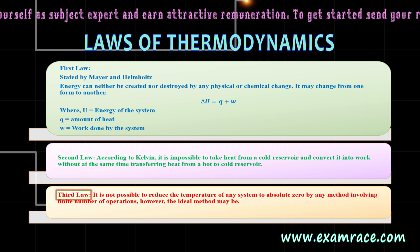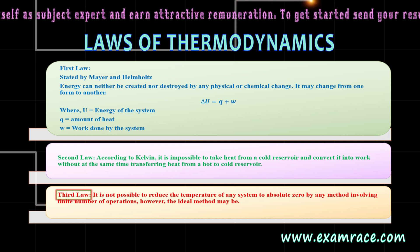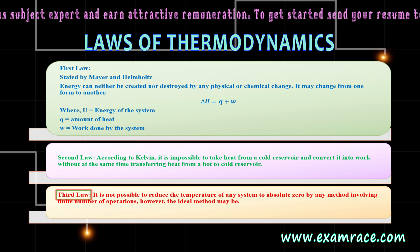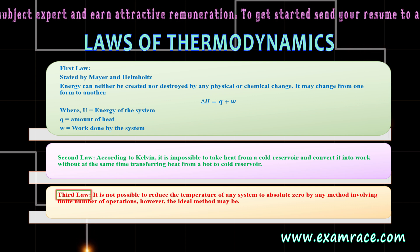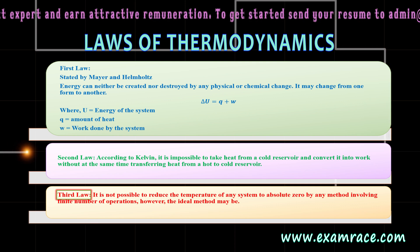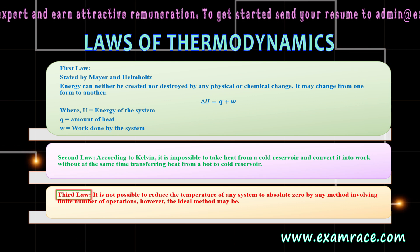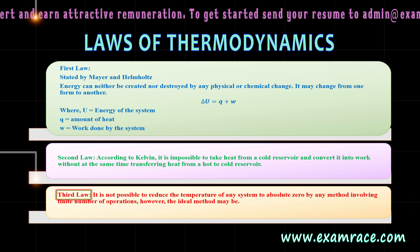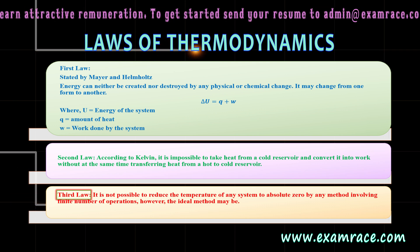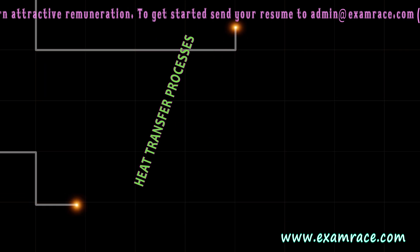The third law states that it is not possible to reduce the temperature of any system to absolute zero by any method involving a finite number of operations, however ideal the method may be.